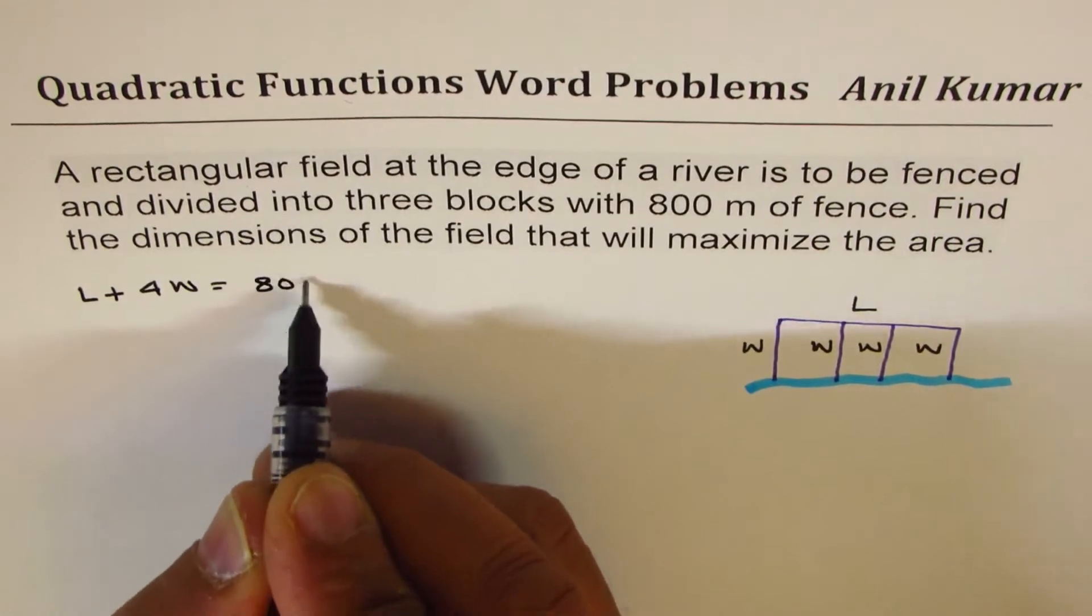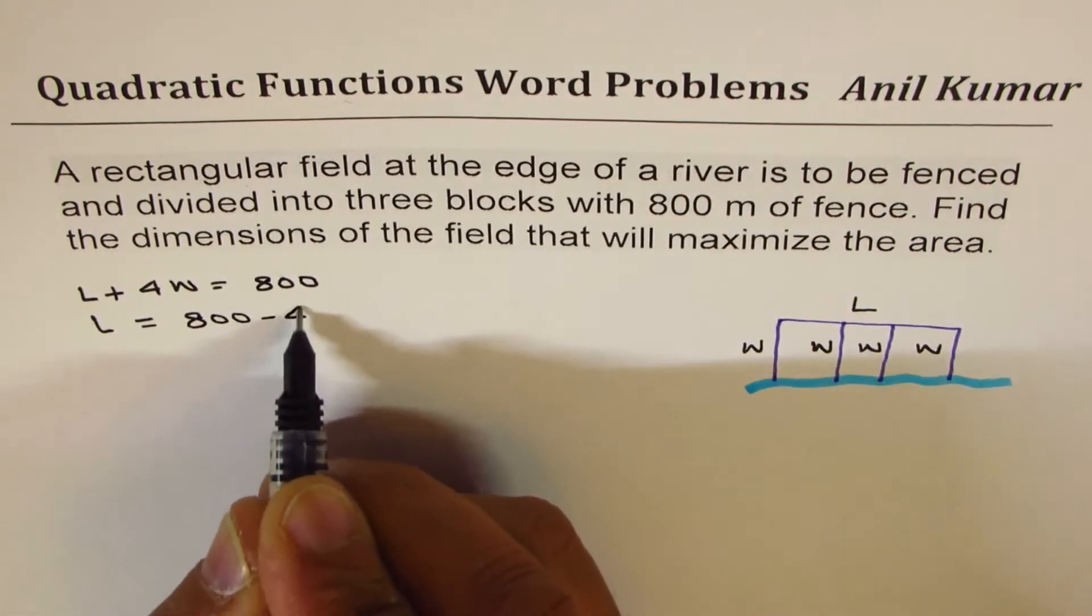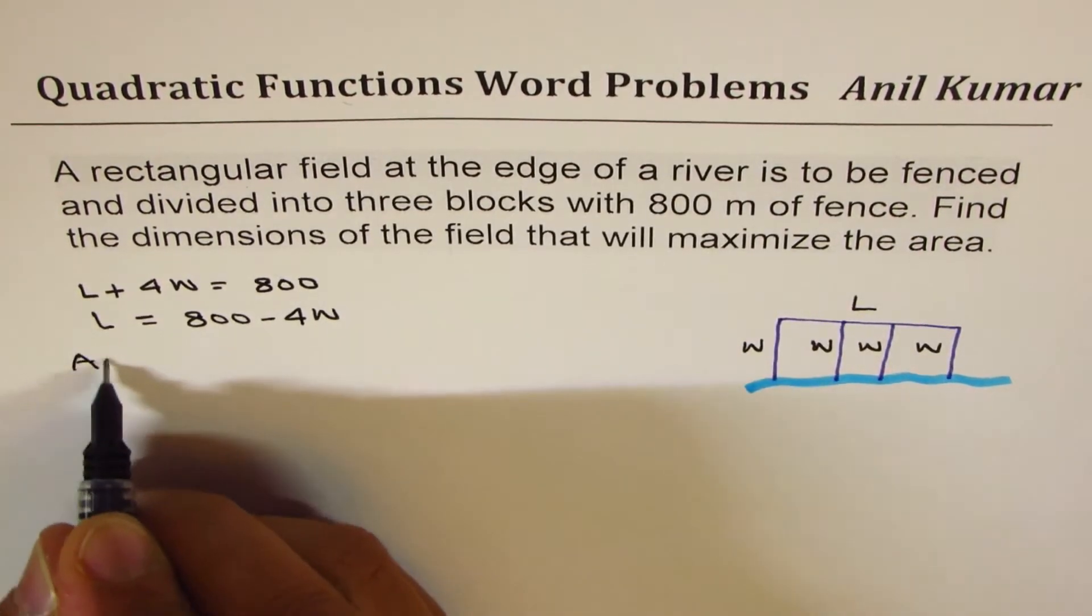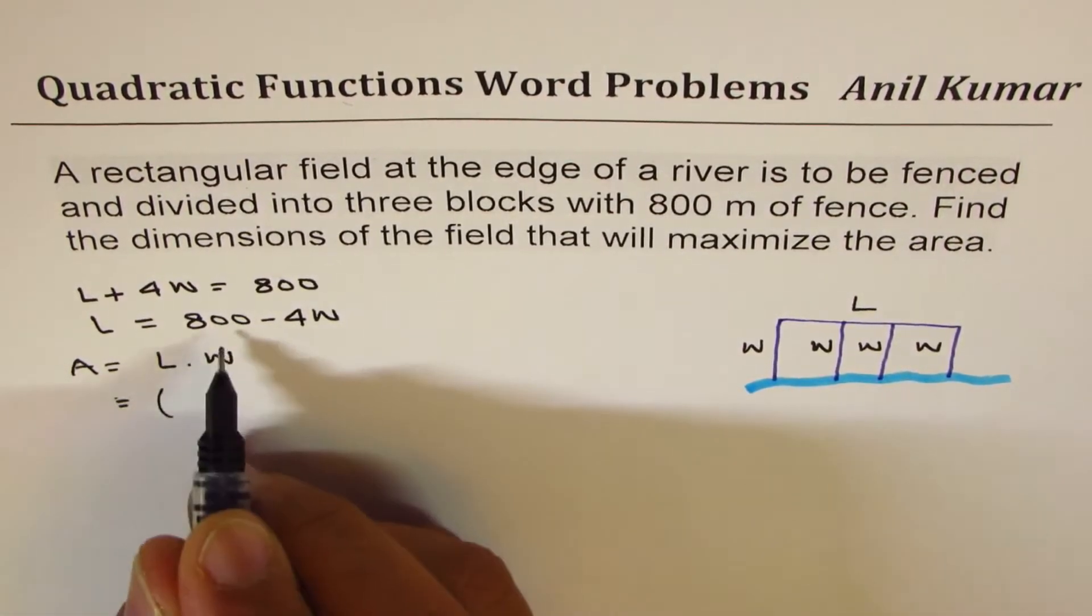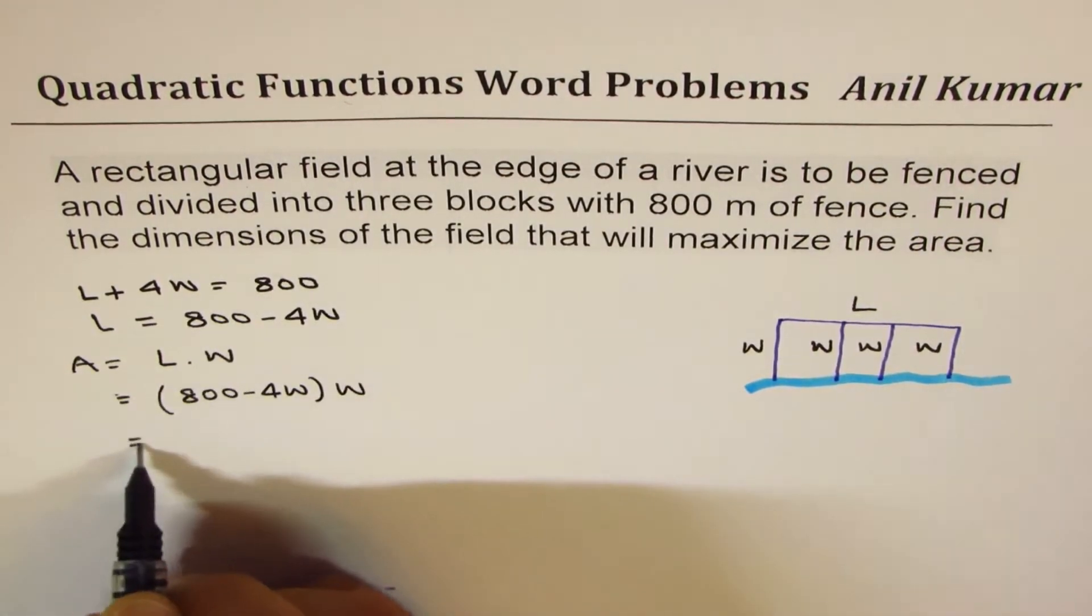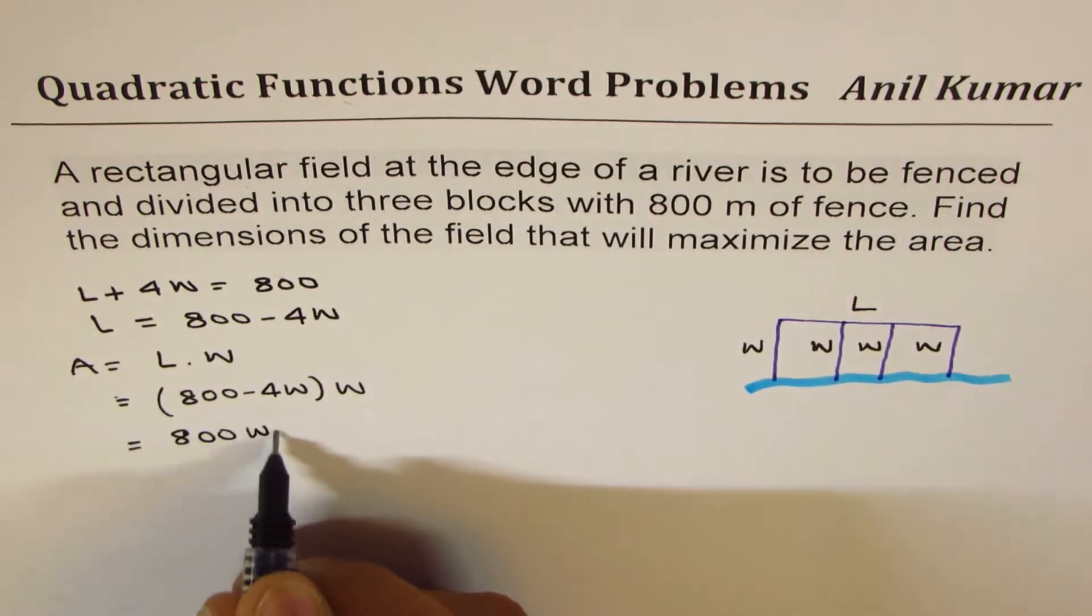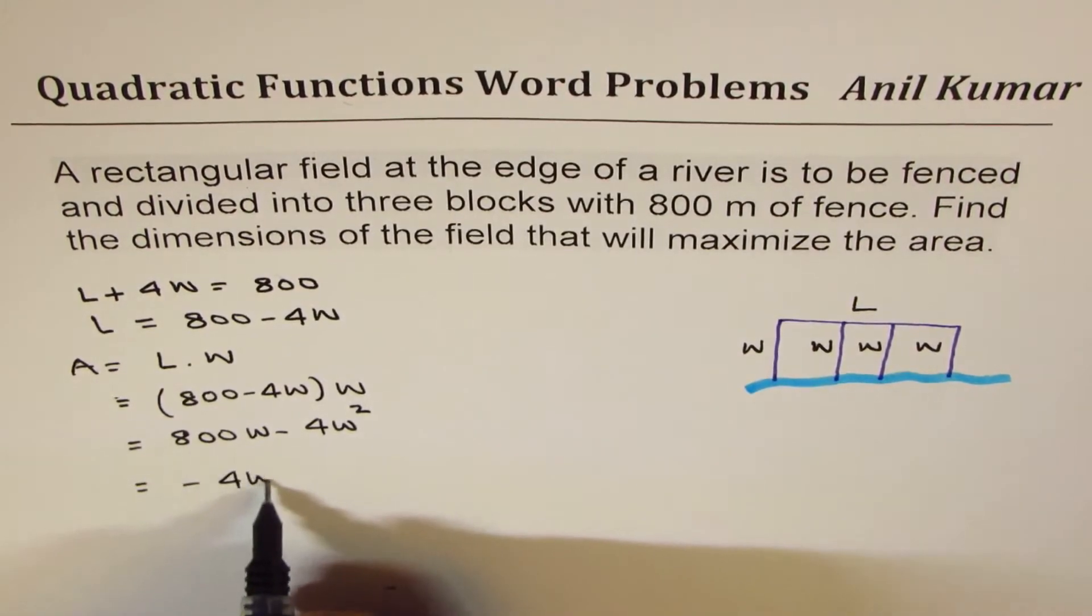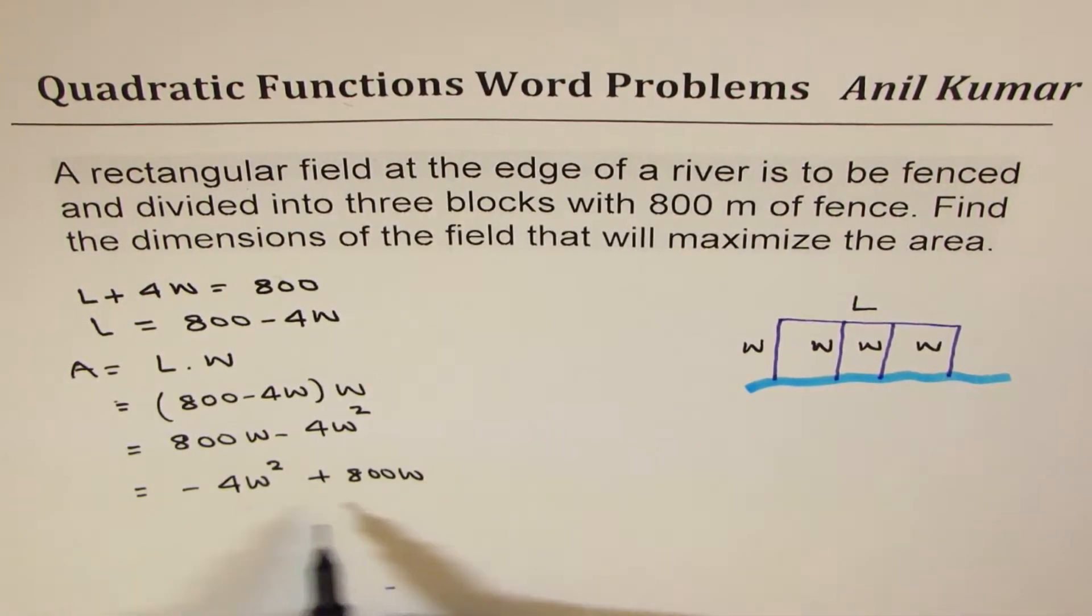Now from here we can write L in terms of W, which is 800 minus 4W. We need to maximize area, so what is the area? Area is length into width. You can replace length with 800 minus 4W to get an equation in one variable W. So we could write this as 800W minus 4W² or minus 4W² plus 800W.